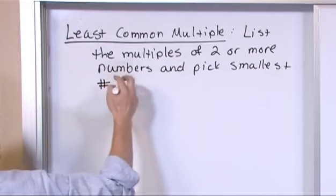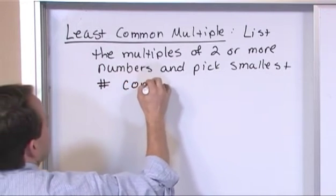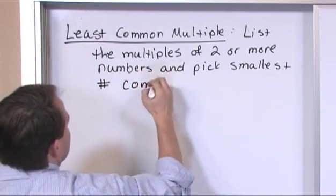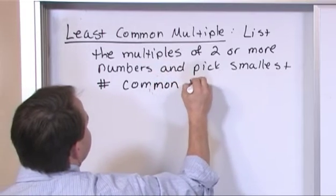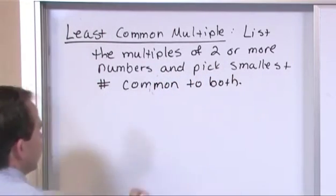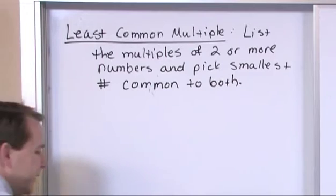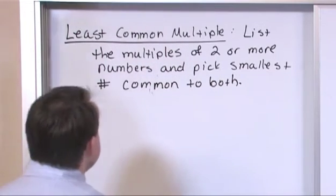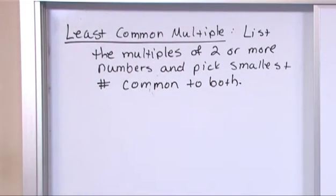So, this is the smallest number common to both. To both lists, in other words. So, really, rather than just talk about this all day, I think the easiest thing to do is just to go in to do some examples.